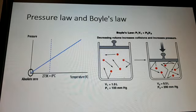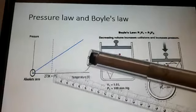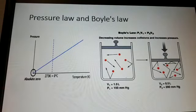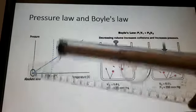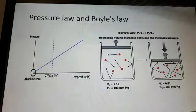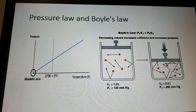Now we studied about the pressure law. The first graph shows absolute zero, which is 0 Kelvin or minus 273 degrees Celsius. At absolute zero, particles are not moving — they have no kinetic energy and no pressure is exerted. For a fixed mass of gas at constant volume, pressure is directly proportional to temperature. As temperature increases, pressure also increases. This is the pressure law.